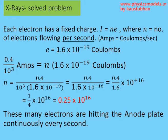So we plug in that as 0.4 mA equals n into charge per electron. That's a constant: 1.6 times 10 to the power minus 19 coulombs.